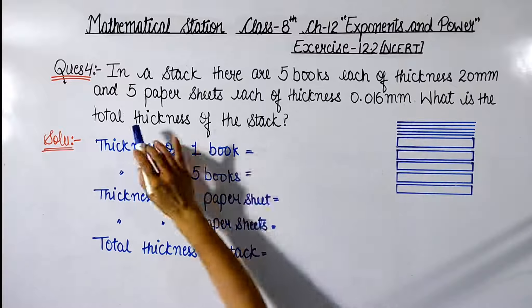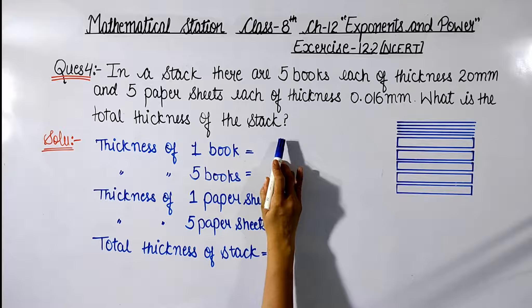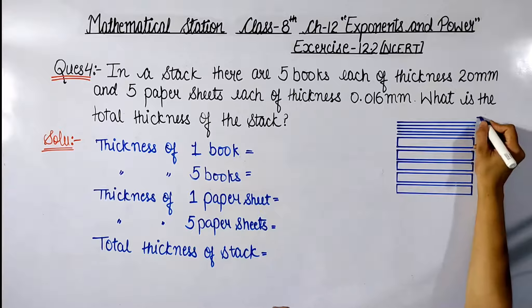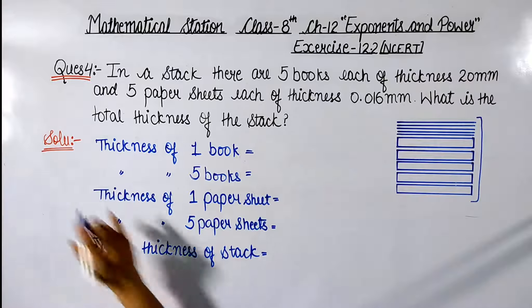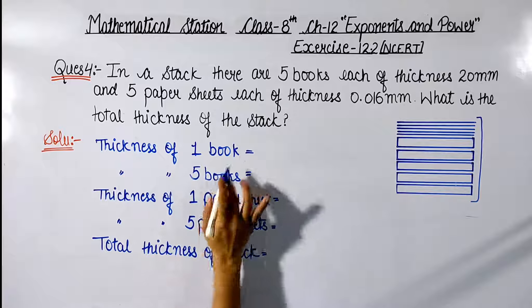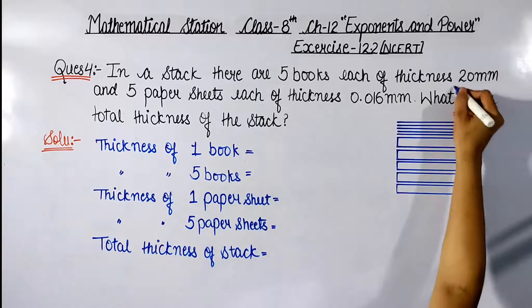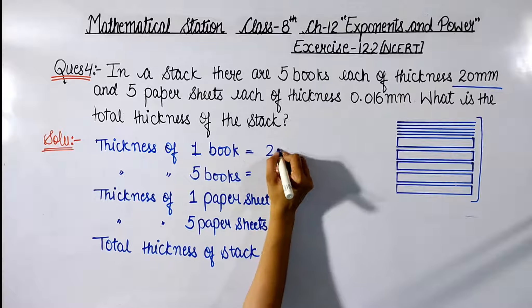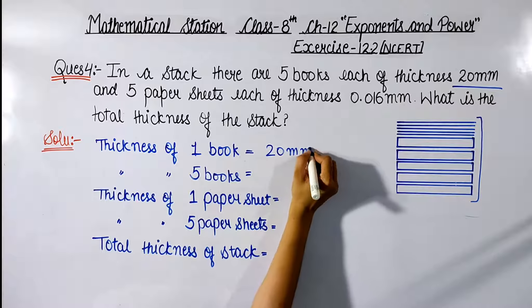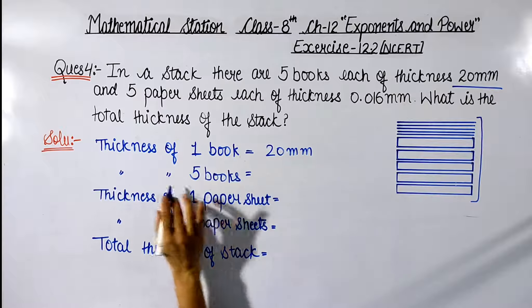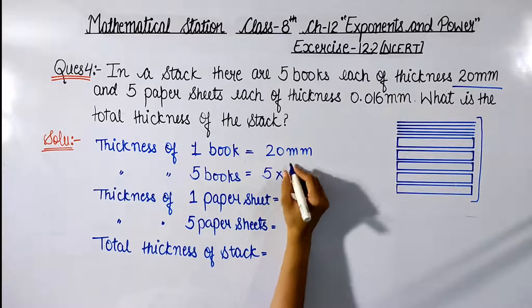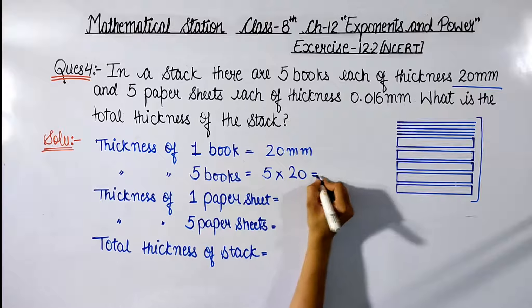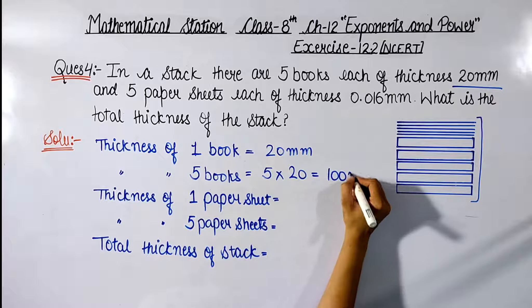What is the total thickness of the stack? We have to find the total thickness of this bundle. The thickness of 1 book is 20 mm, so the thickness of 5 books is 5 multiplied by 20, which is equal to 100 mm.